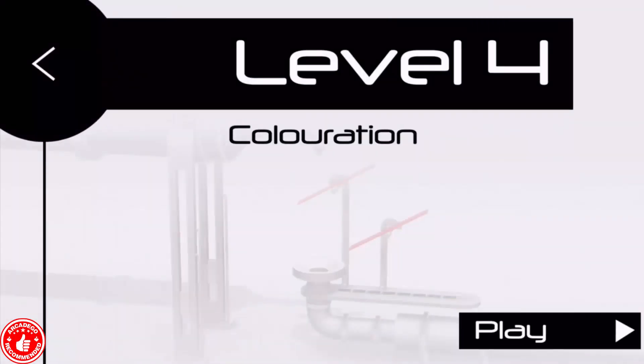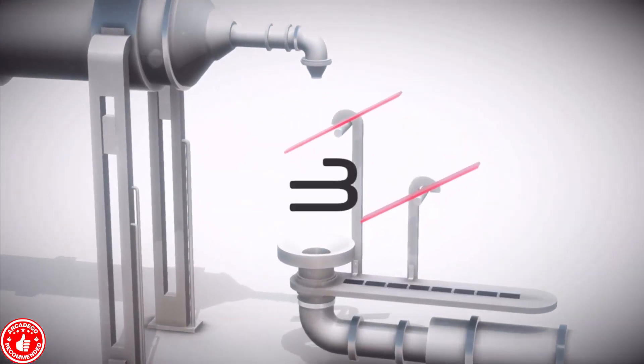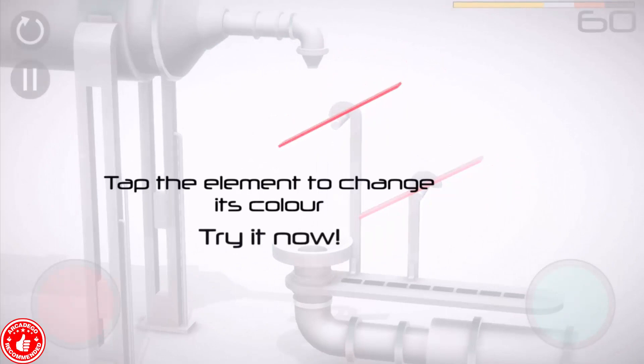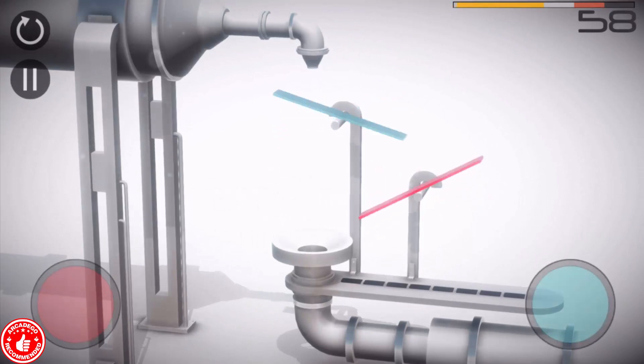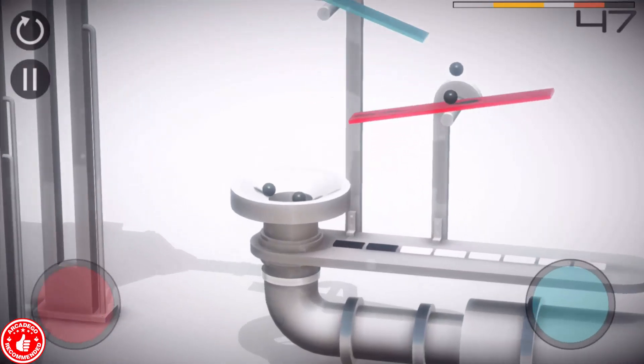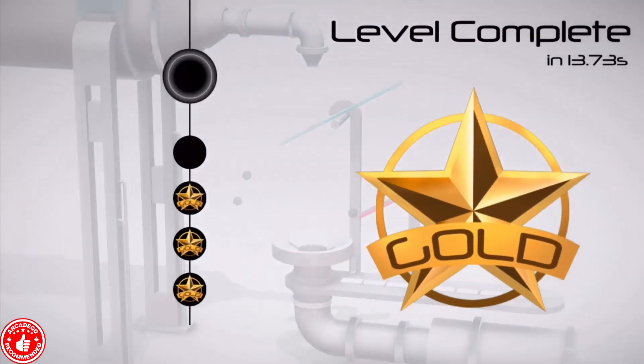Let's go to level 4. There's also like 60 levels. So coloration. I never got this far. So tap the elements to change the color. Try it now. There we go. That's pretty cool. We don't need to control this red one. We could just sit there. Because the hole is right there. Or we could just mess around with it. Yes. There we go.